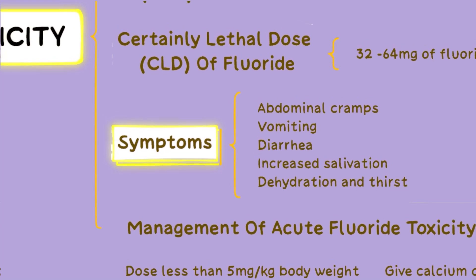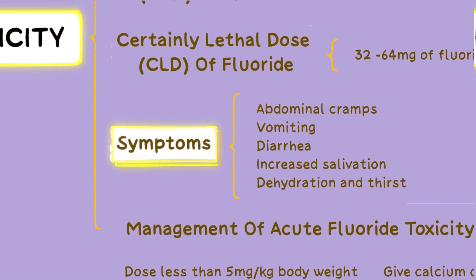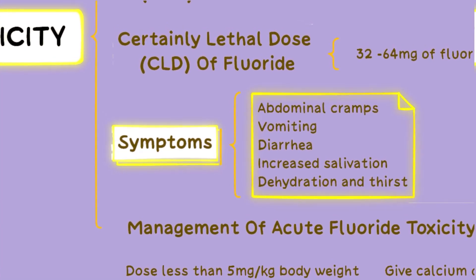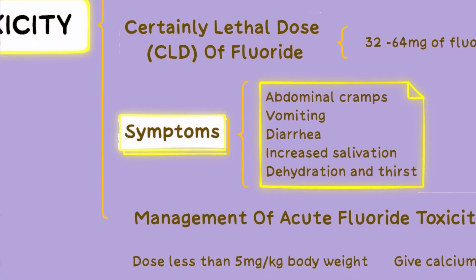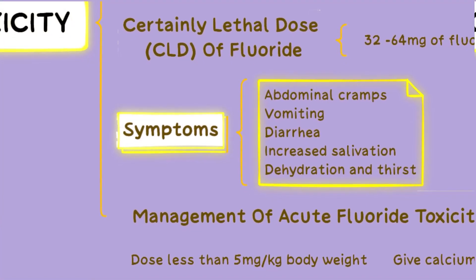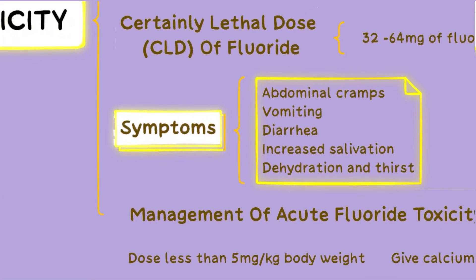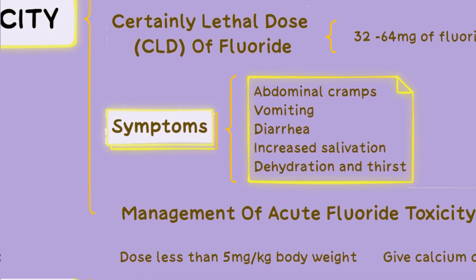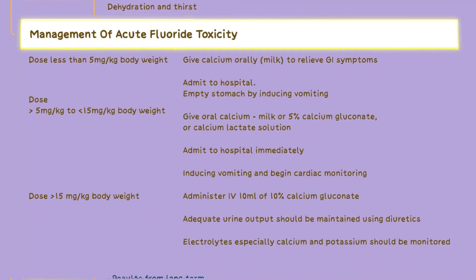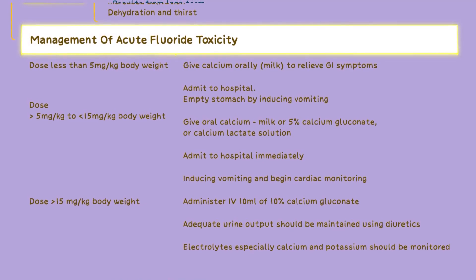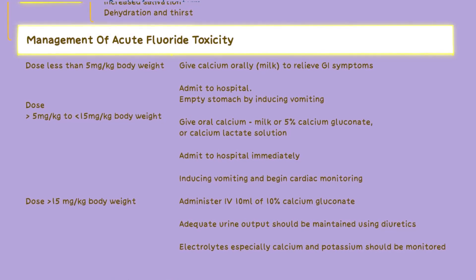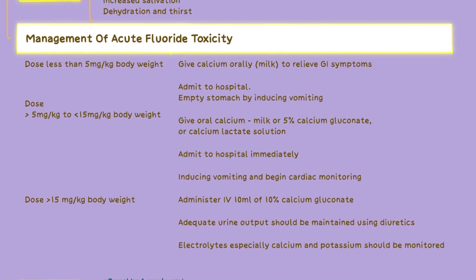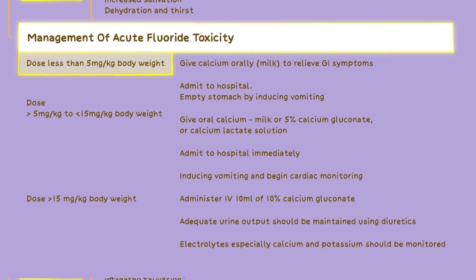Symptoms of acute fluoride toxicity may include abdominal cramps, vomiting, diarrhoea, increased salivation, dehydration and thirst. The management of acute fluoride toxicity depends on the dose of fluoride ingested. The general management steps for different dose ranges are as follows.